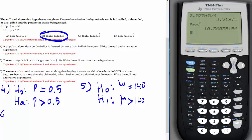Number six. The owner of an outdoor store recommends against buying the new model of GPS receivers because they vary more than the old model, which had a standard deviation of 50 meters. Write the null and alternative hypothesis. It's talking about variation, about standard deviation. They vary more than 50 meters, so sigma greater than 50, and null has sigma equals 50.